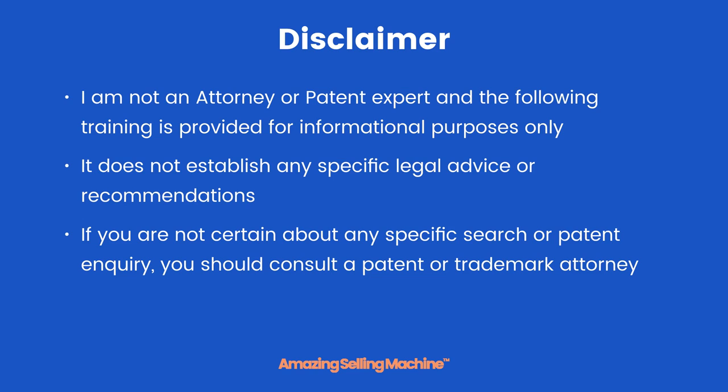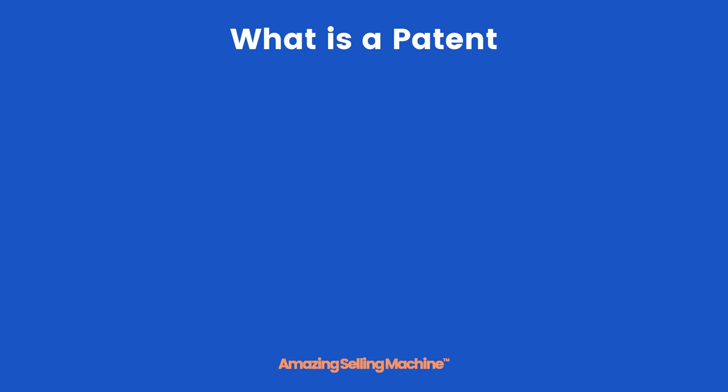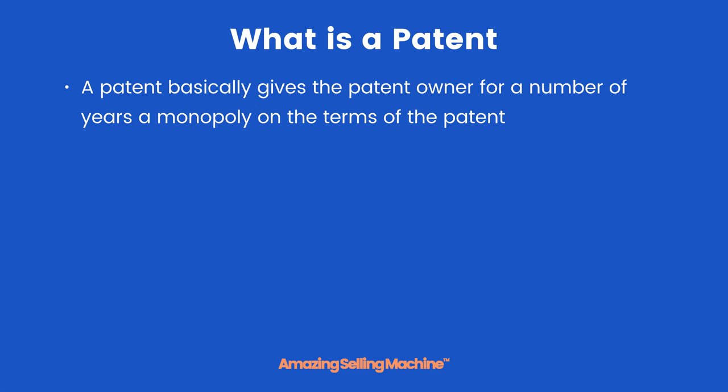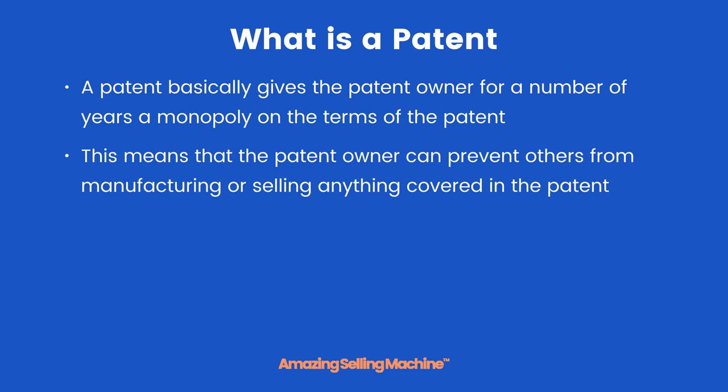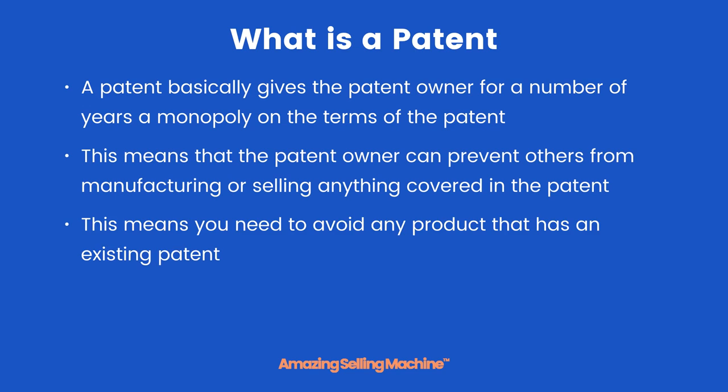So what is a patent? A patent basically gives the patent owner, for a number of years, a monopoly on the terms of the patent. This means that the patent owner can prevent others from manufacturing or selling anything covered in the patent. This means you need to avoid any product that has an existing patent.